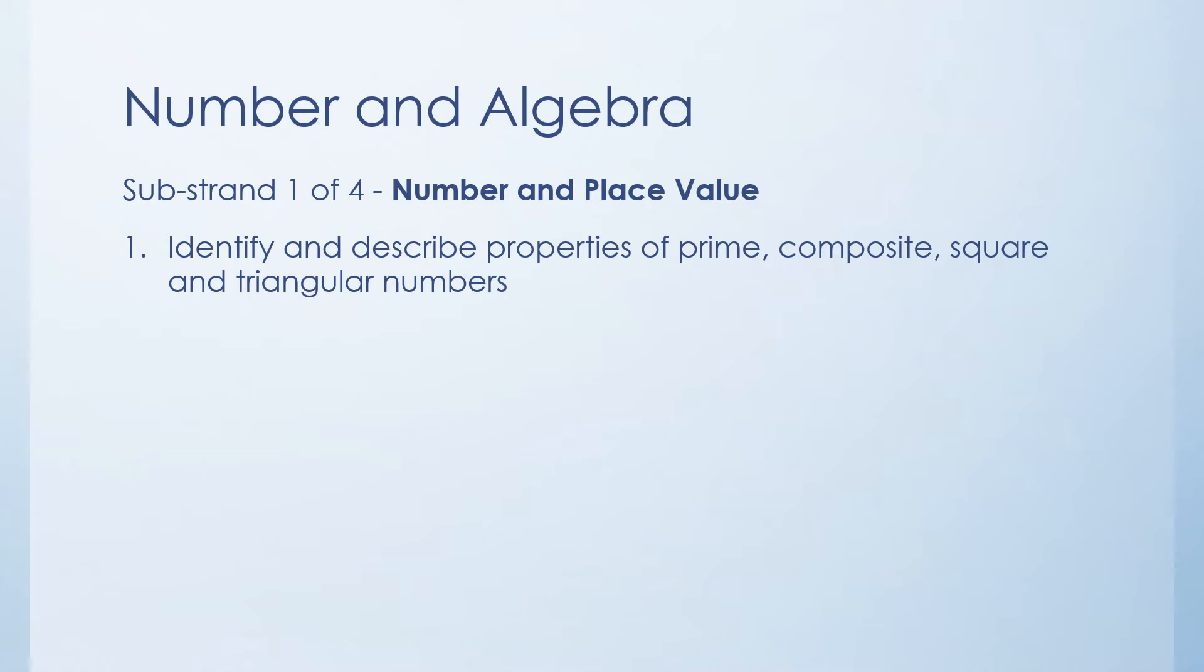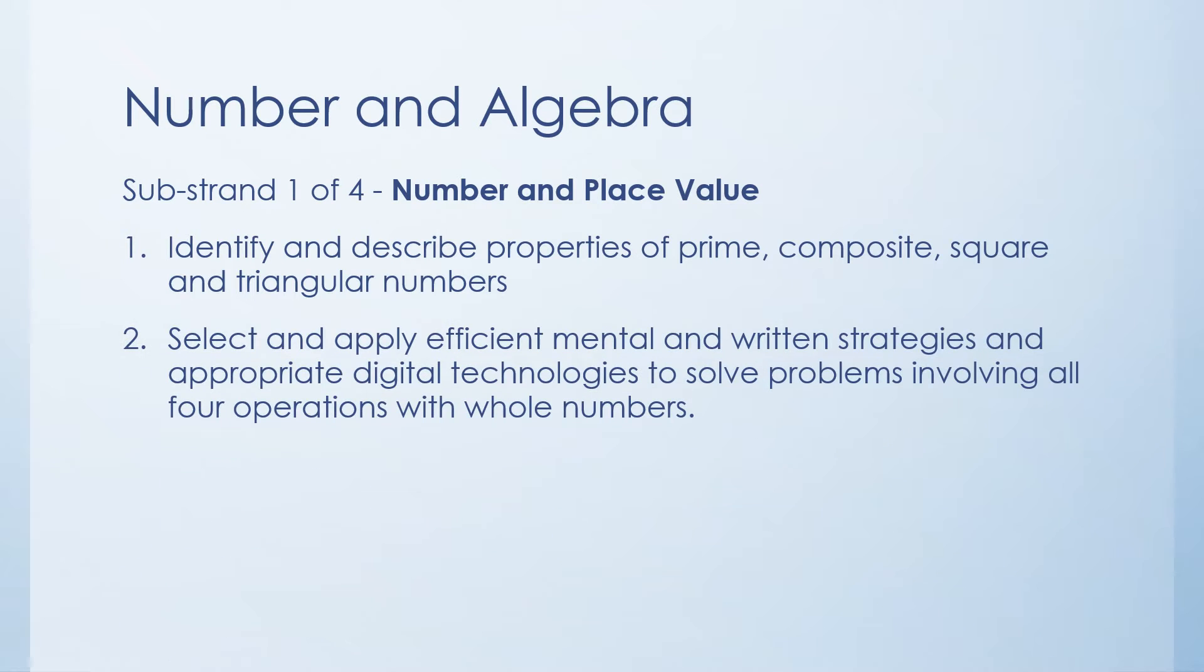The first content descriptor is where you have to identify and describe properties of prime numbers which are those that can only be divided by themselves and by one. Composite numbers which are numbers that are not prime. Square numbers which are things like 4 because 2 multiplied by itself makes 4 and therefore you could make a little 4 square grid. Or triangular numbers which will be like a number like 6 where you've got 3 down the bottom, 2 in the middle, 1 on the top. Each number gets incrementally smaller bit by bit and that can make a little triangular shape. So you're trying to find, identify and describe properties of those.